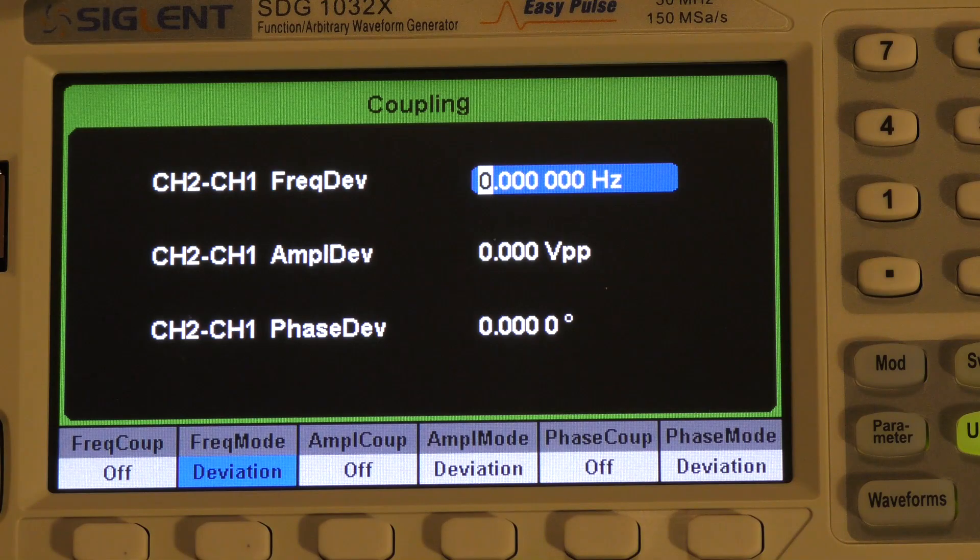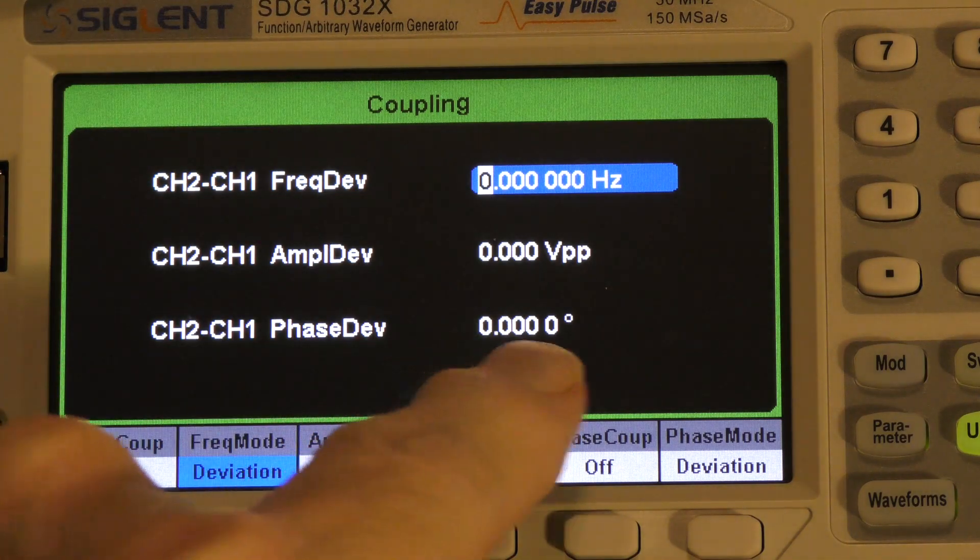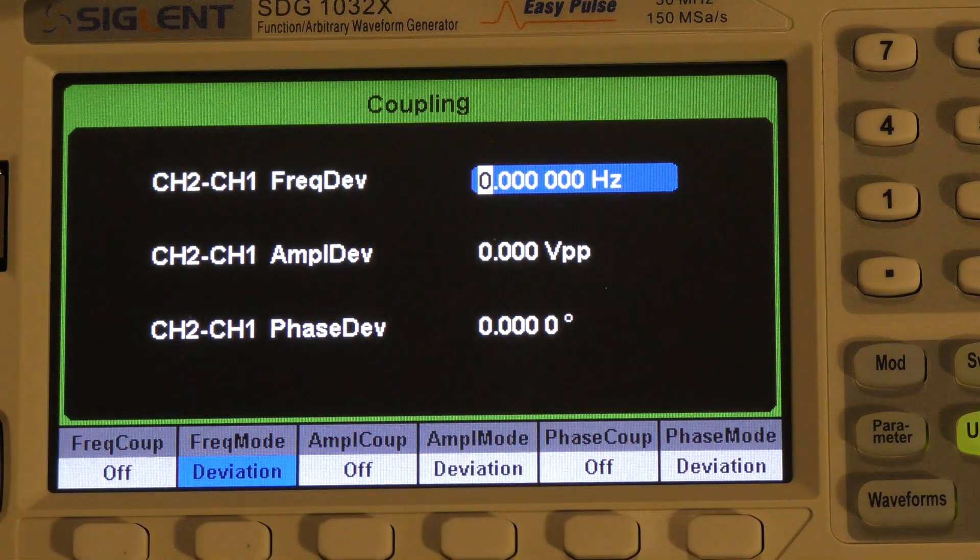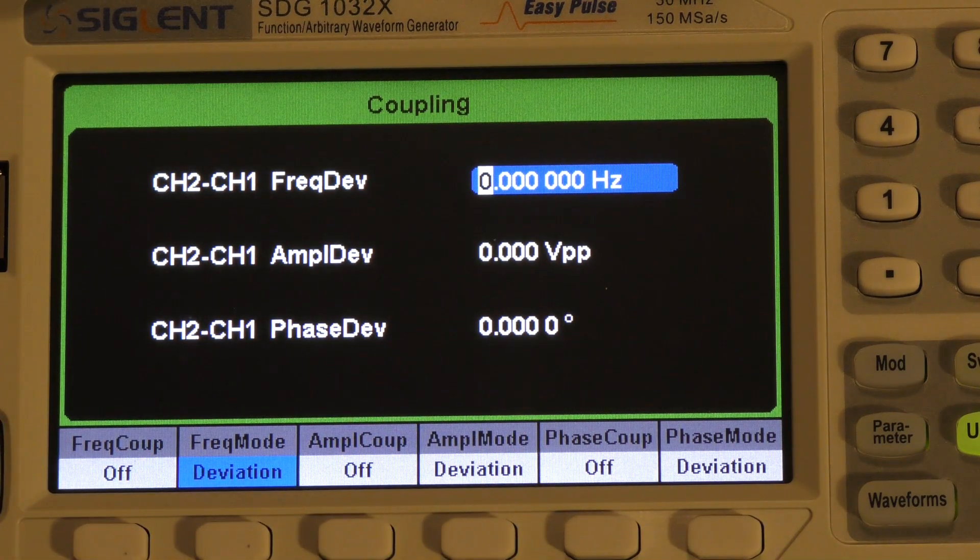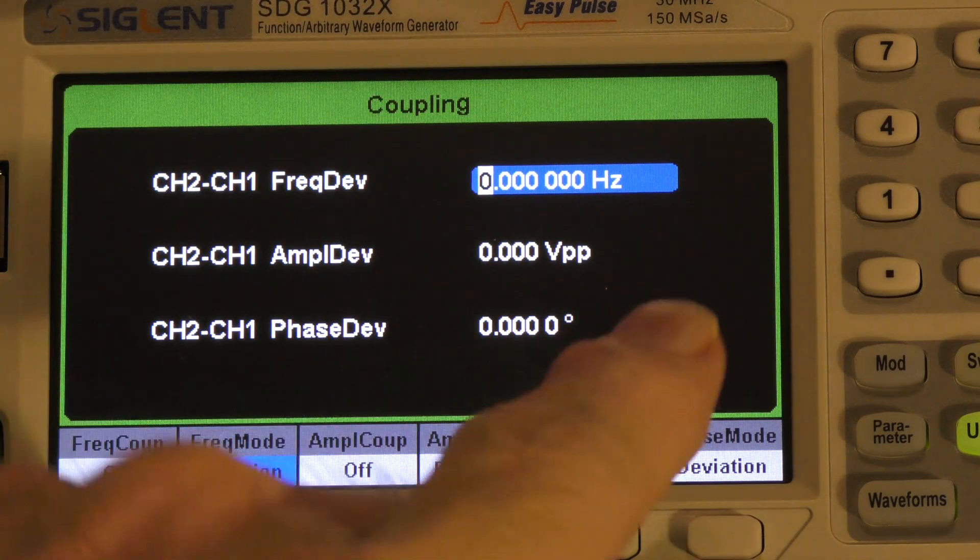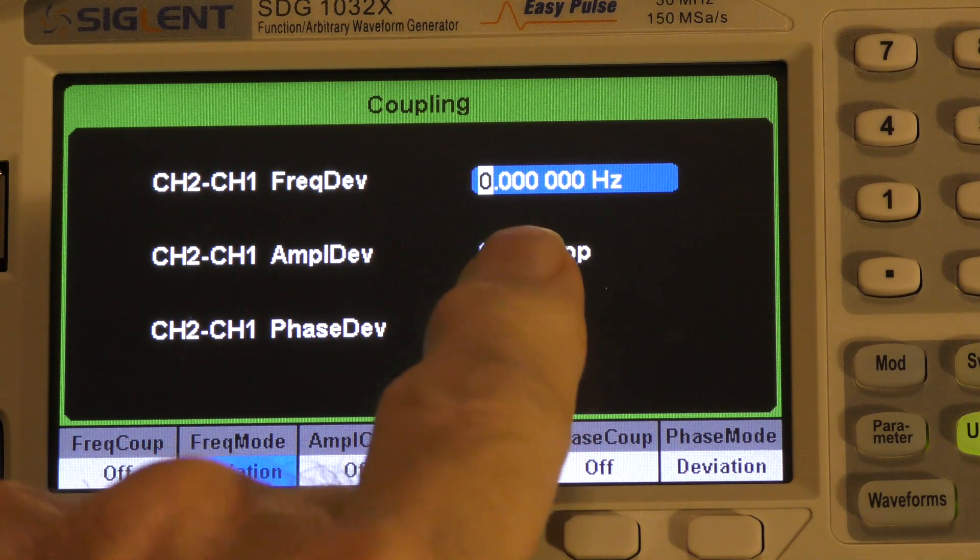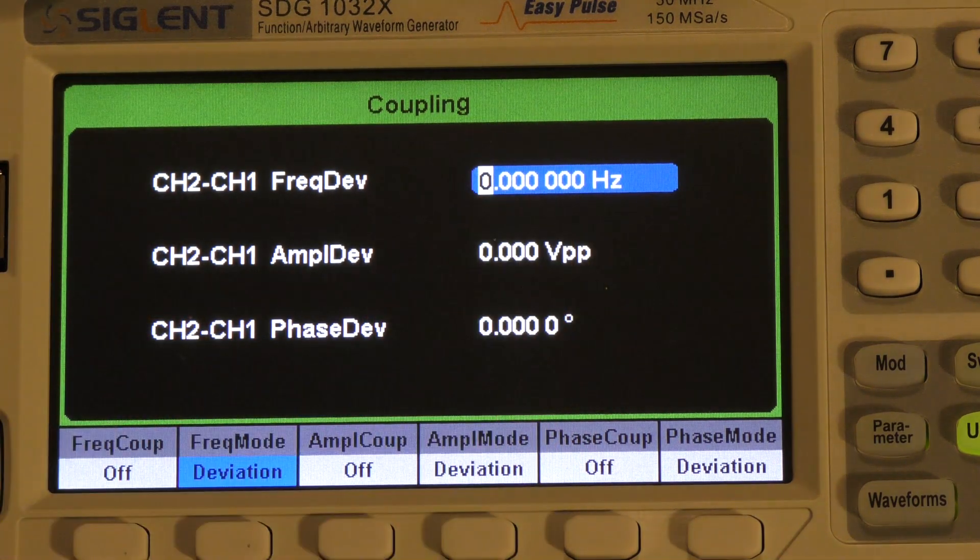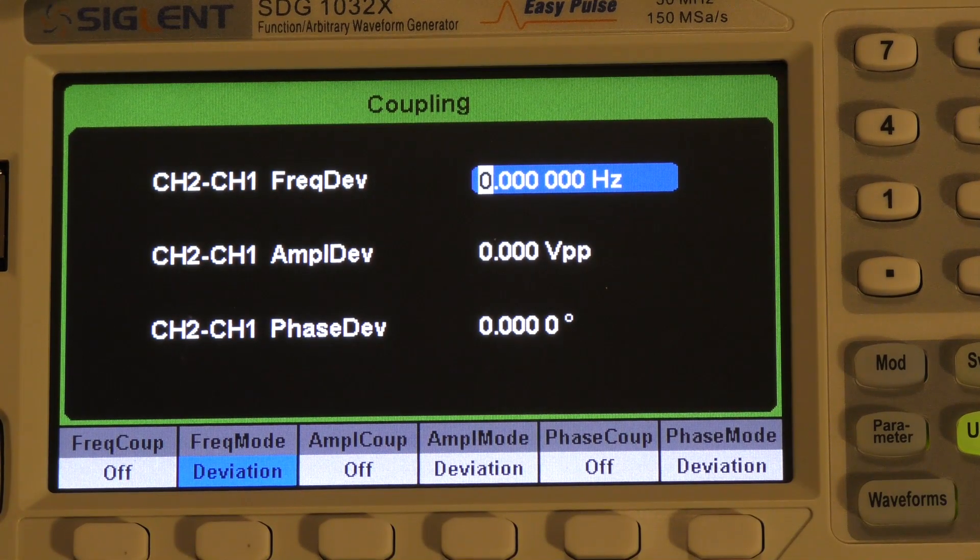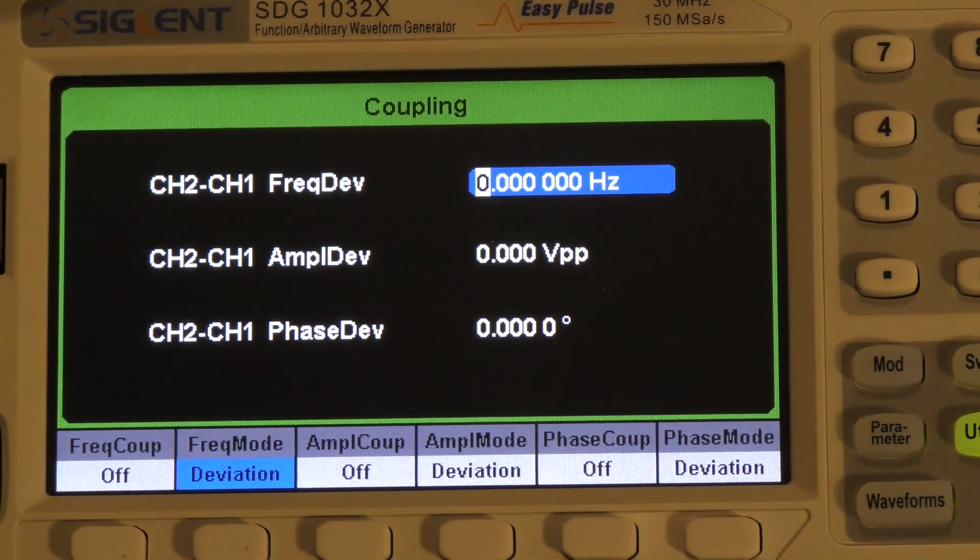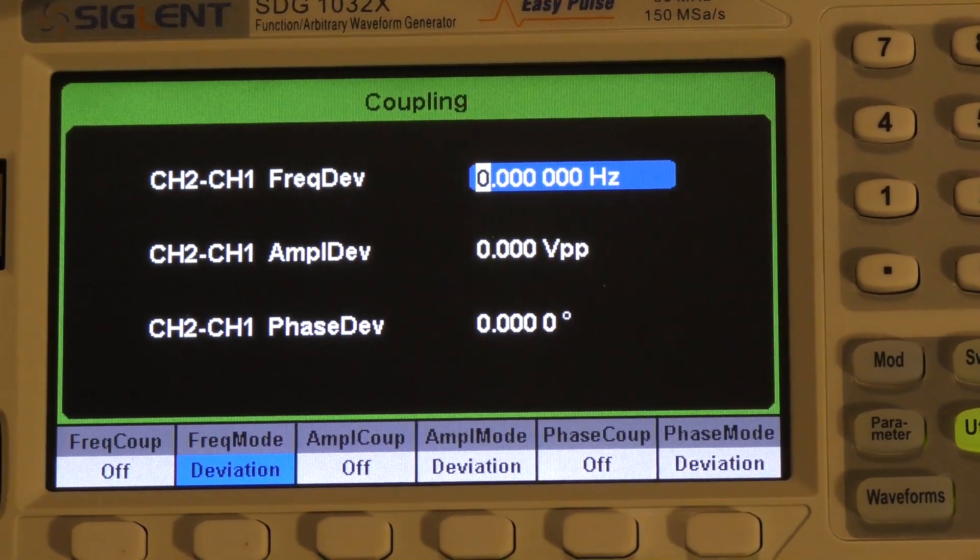And then, no matter what you change, they will remain that amount of deviation apart, no matter what else you do. You move Channel 1, Channel 2 moves with it, but it remains at this phase deviation, and at this amplitude difference, and at this frequency difference. So, I thought I would show you that, because that's one thing where the Siglent gets high marks over the other two.